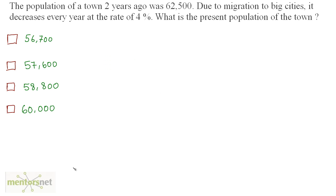The population of a town 2 years ago was 62,500. Due to migration to big cities, it decreases every year at the rate of 4%. What is the present population of the town?